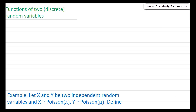Hello. In this video, we discuss functions of two discrete random variables. In particular, we consider a scenario in which I have a random variable Z, which can be written as g of X and Y, where X and Y are discrete random variables.